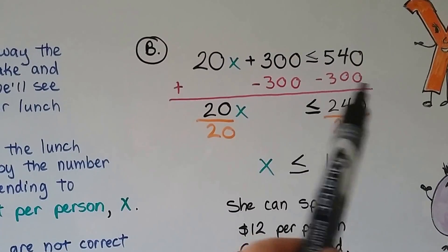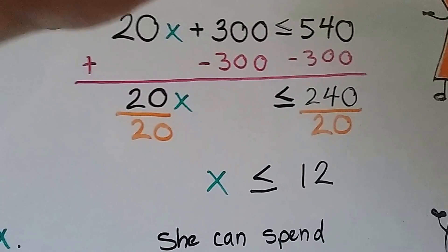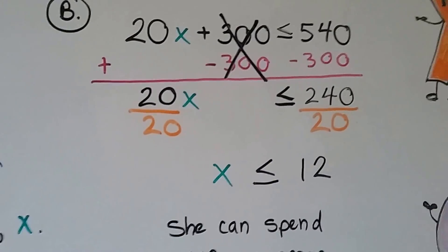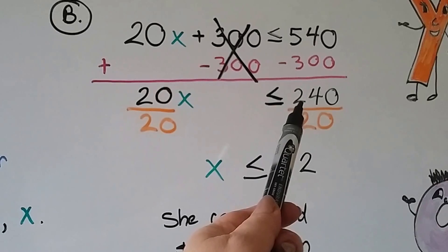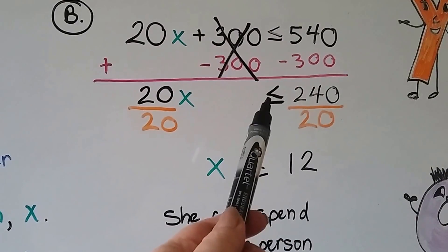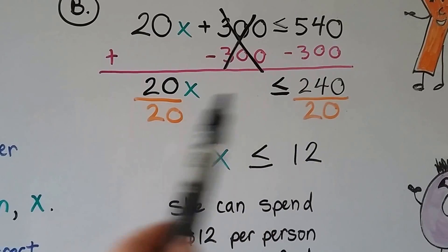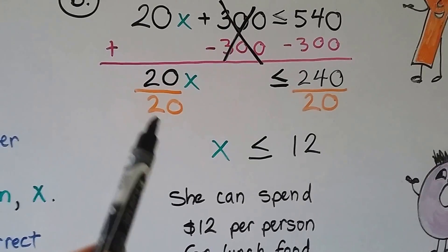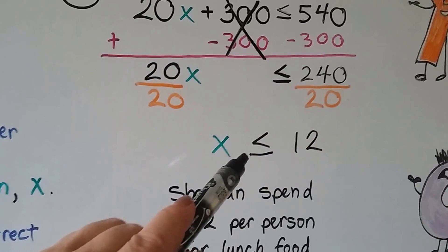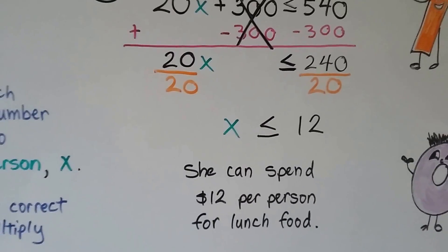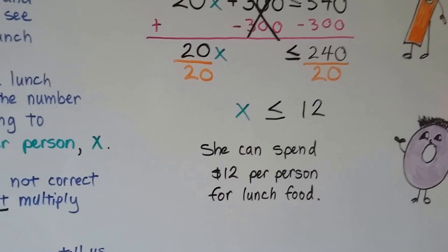We add negative 300 to each side of the inequality because we're trying to get X by itself. This creates a zero pair — plus 300 minus 300 makes zero. When we take it away from the 540, it leaves us with 240. So now we have 20X is less than or equal to 240. We divide both sides by 20, which makes X is less than or equal to 12. So she can spend $12 per person for lunch food or less, and it'll be within her budget.